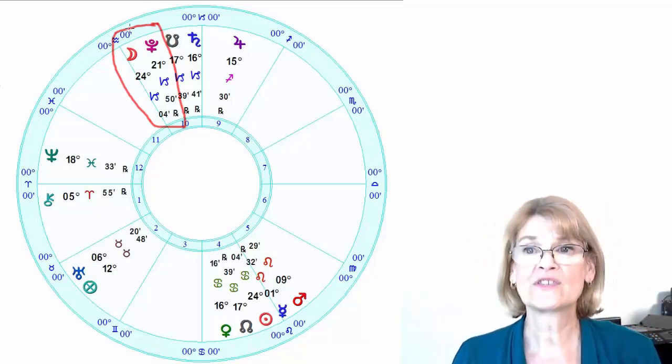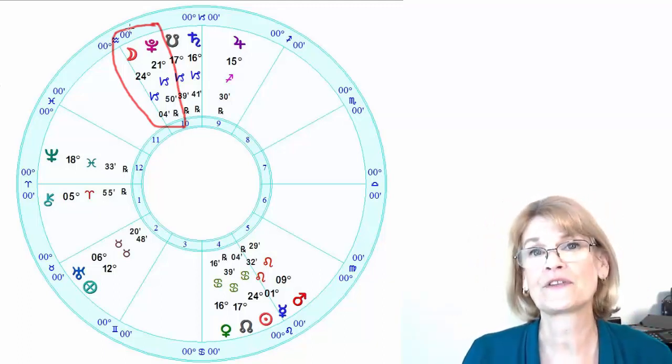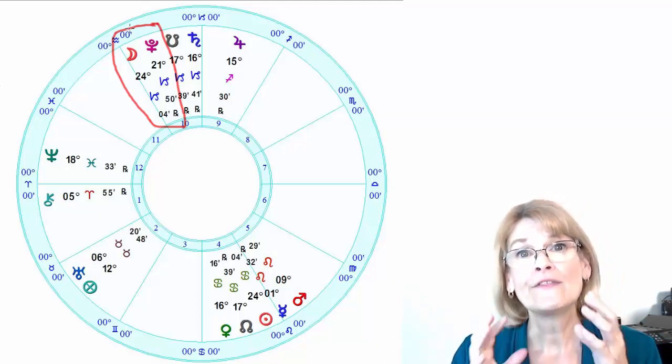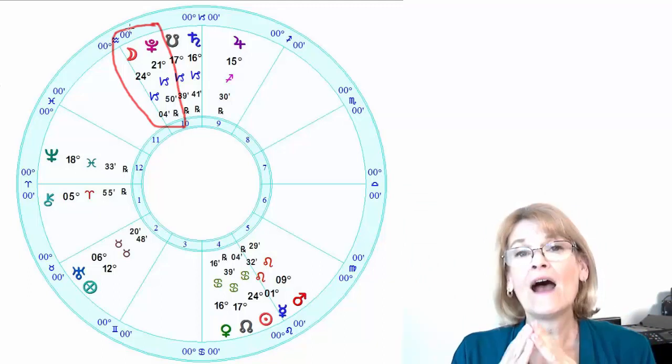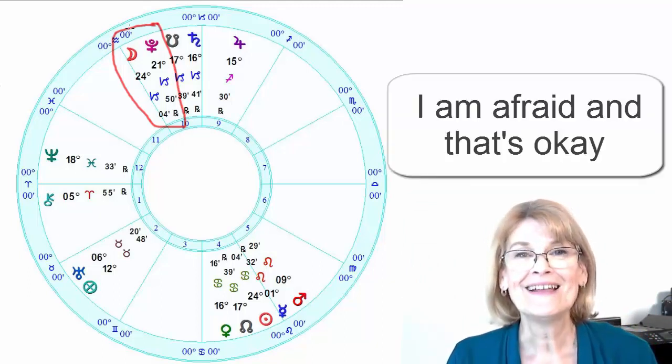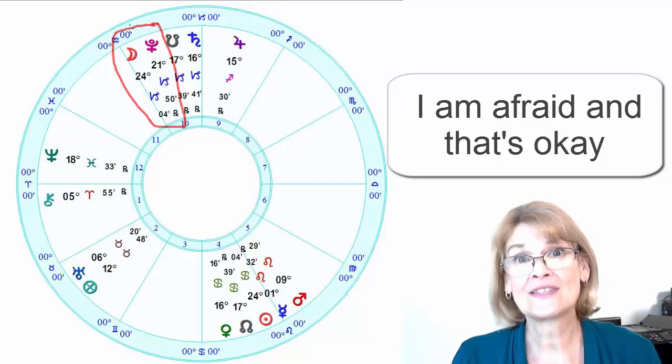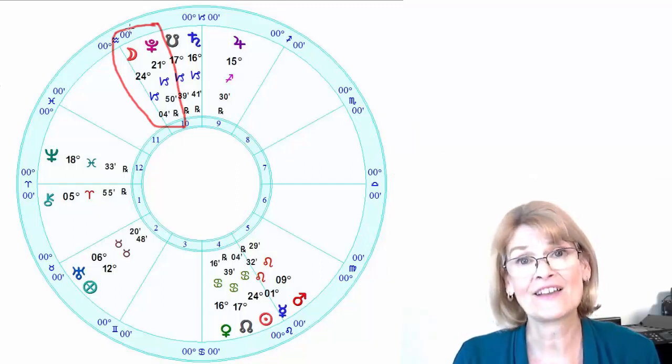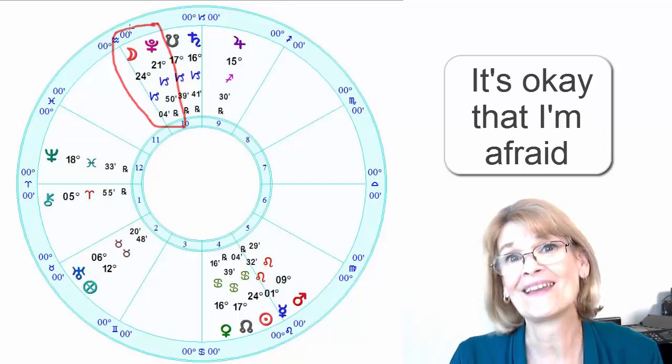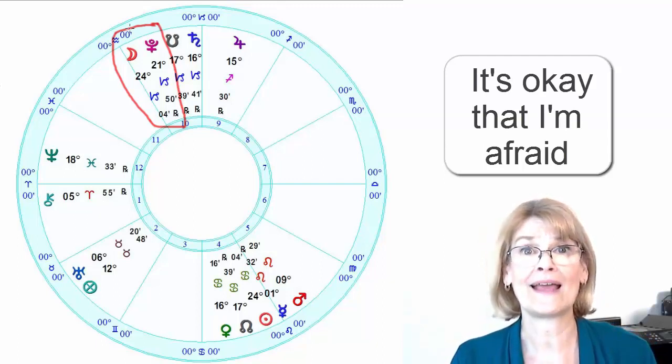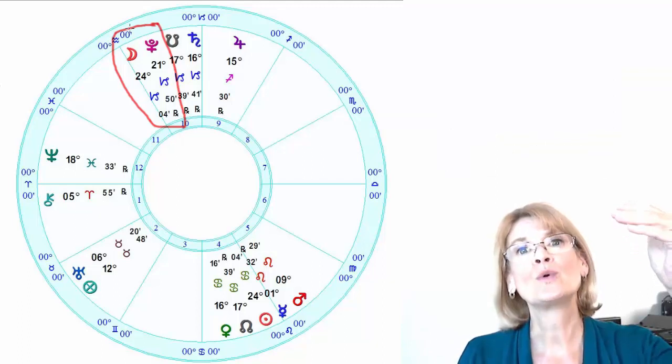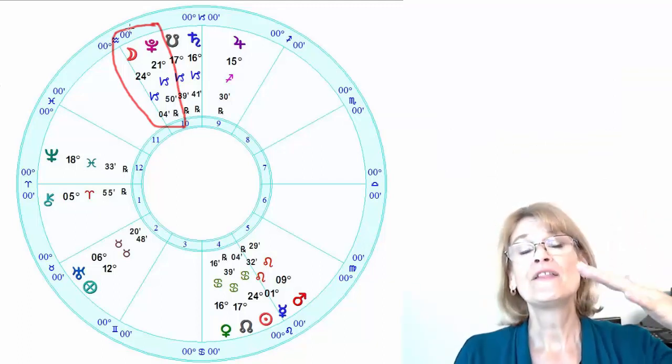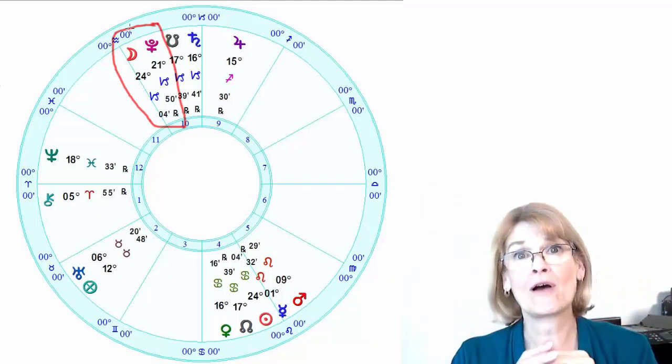But you can actively help with this energy by acknowledging what the emotion is. So that if you said, geez, yesterday I was super confident about making my presentation today. I'm like shaking in my boots. The thing to do is to say, I'm afraid. And that's okay. To give yourself understanding, to say to yourself with compassion, it is okay that I'm afraid right now. And what will happen is the emotion will get less and less. By acknowledging it, the emotion will actually calm down.